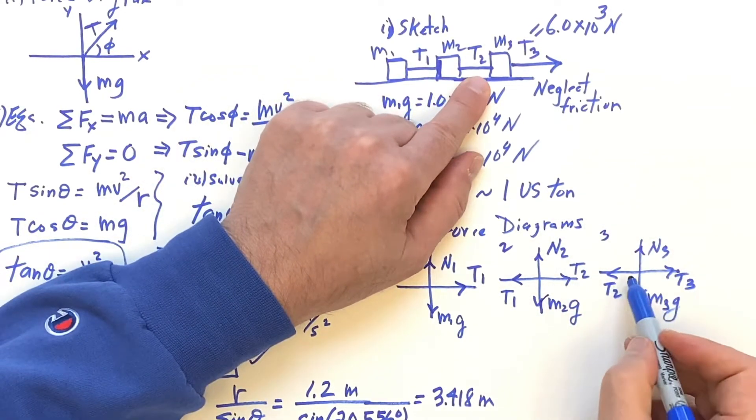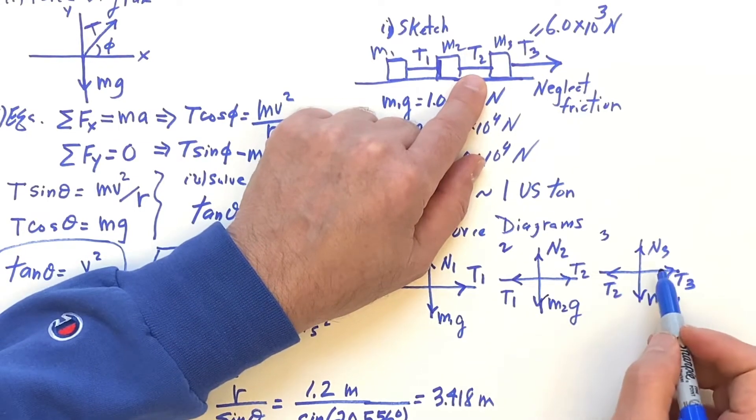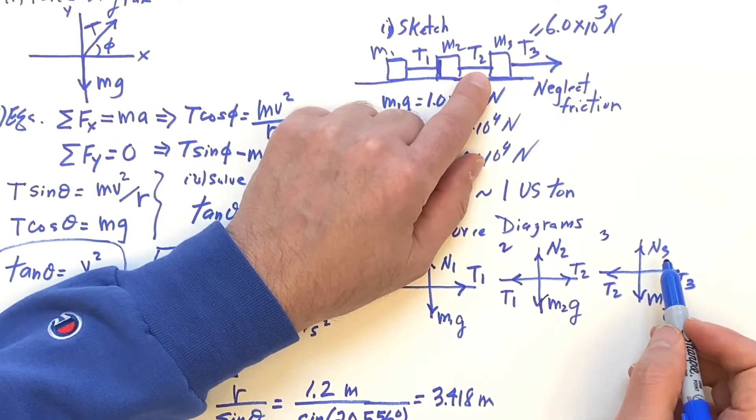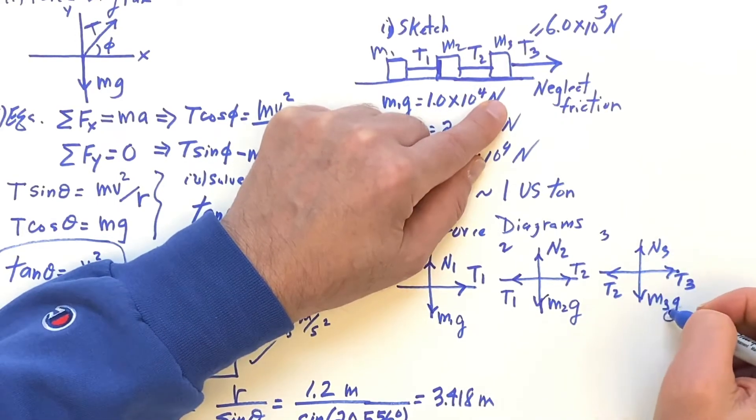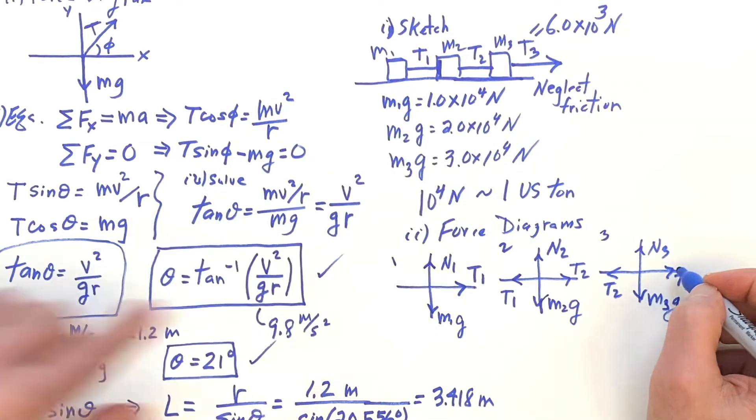Then here, we have T2 pulling on mass 3 back, equal and opposite, Newton's third law, action-reaction. N3 going up, M3G going down, and T3 going to the right.